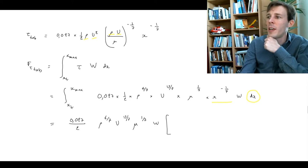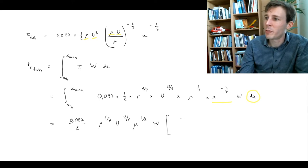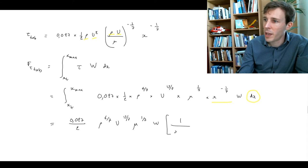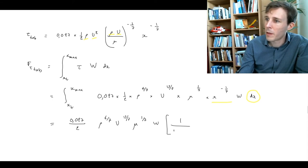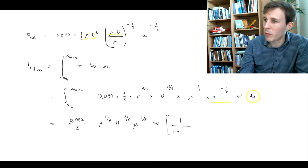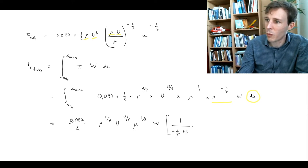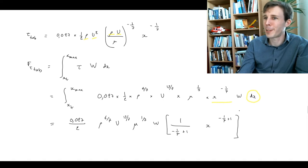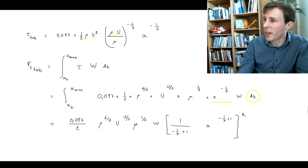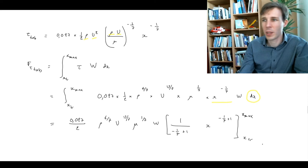So we have 0.027 divided by 2 multiplied by rho^(6/7), u^(13/7), mu^(1/7), w, and then we carry out the integral. The integral of x to the power of something happens to be 1 over (-1/7 + 1) of x to the power (-1/7 + 1), which is in between x_max and x_transition.